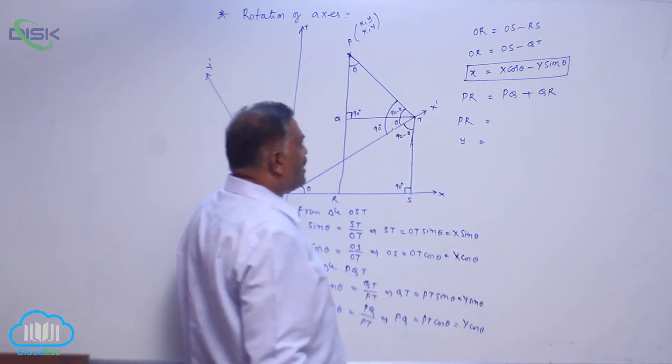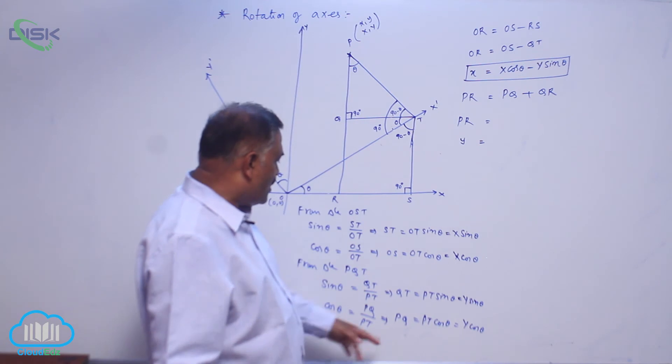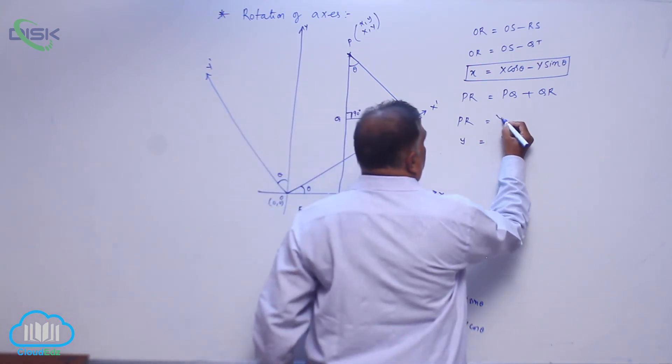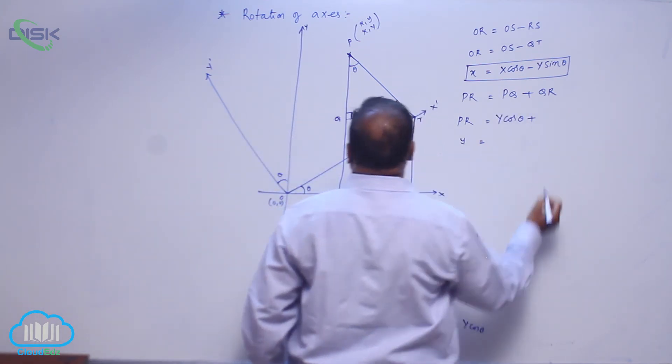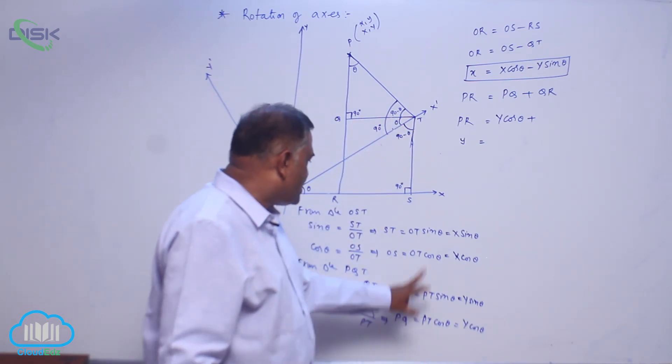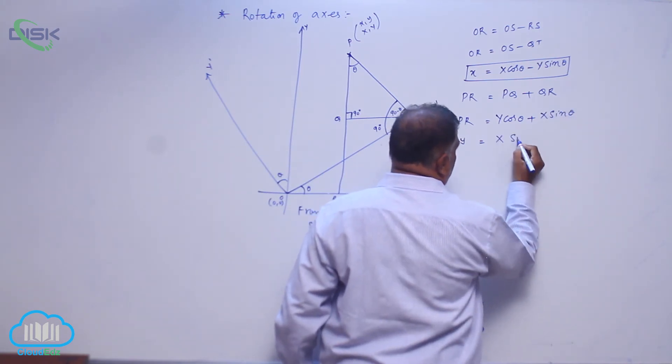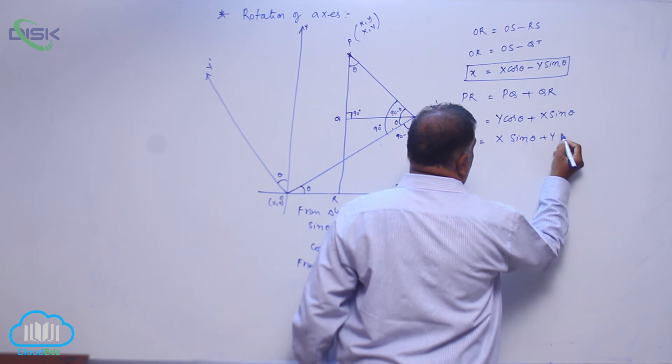Now PR equals PQ plus QR. PQ is equal to how much we got? Y cos theta plus QR. Now QR is nothing but ST. ST value is nothing but X sin theta. This is X sin theta plus Y cos theta.